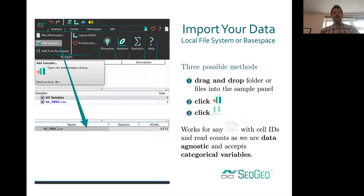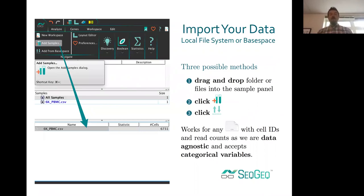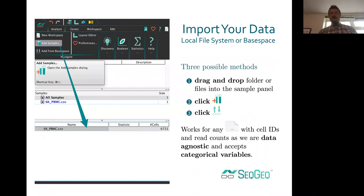The first step is probably going to be importing your data from wherever you have it stored. We support drag and drop import — if you have a CSV file representing your expression matrix, you can drag and drop it directly from your desktop into the workspace. You can also click the add samples button, or load directly from BaseSpace if your data is stored there.